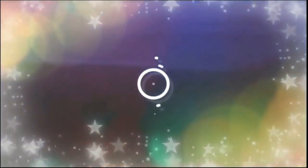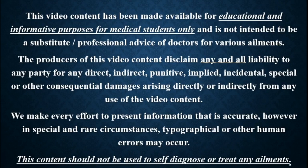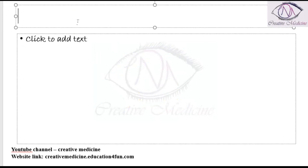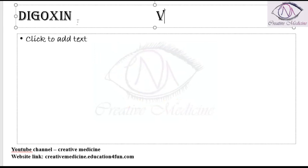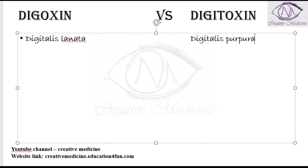Hello friends, welcome to Creative Medicine. In this lecture we will learn about the differences between digoxin and digitoxin. Digoxin is obtained from the plant Digitalis lanata, whereas digitoxin is obtained from the plant Digitalis purpurea. Almost 70 percent of digoxin is absorbed.